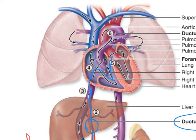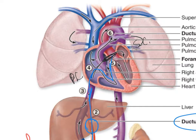First you have the foramen ovale — this is a hole that goes between the right and left atria, allowing the blood to directly move from the pulmonary circuit to the systemic circuit, bypassing the lungs. A little bit is still going to go through into the pulmonary trunk, and then it's got another opportunity to bypass.